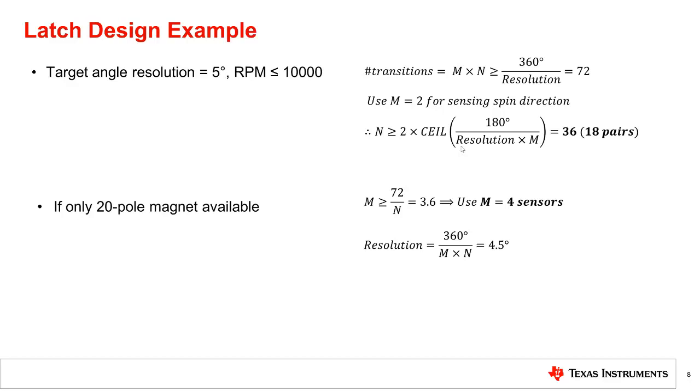However, if only a 20 pole magnet is available, then the number of sensors must be increased to achieve the target resolution. Solving equation 3a for M indicates that a minimum of four latch sensors are needed with a 20 pole magnet.